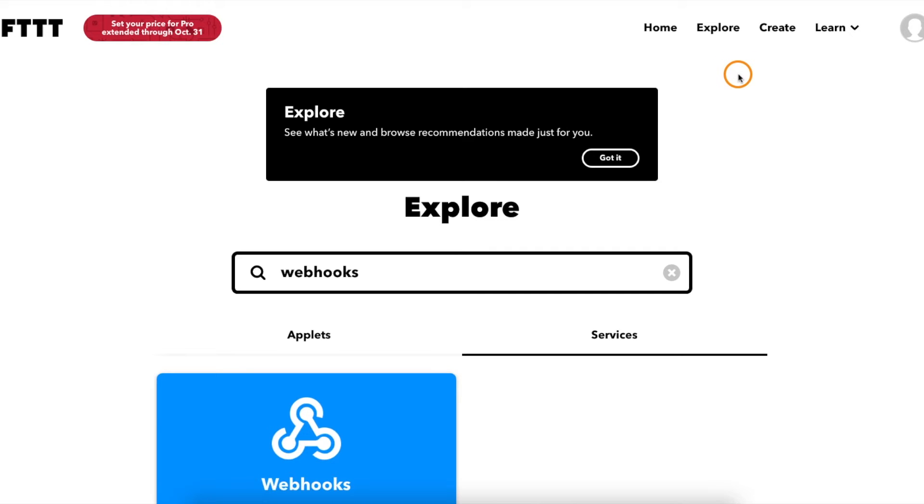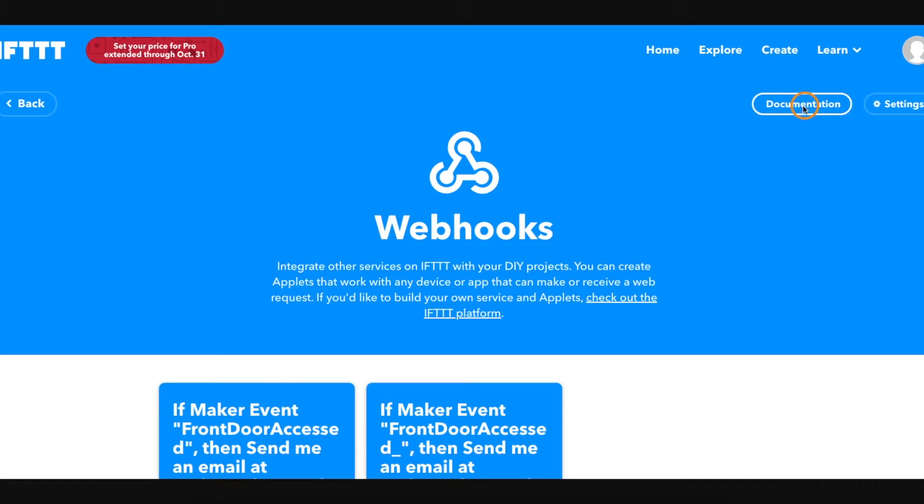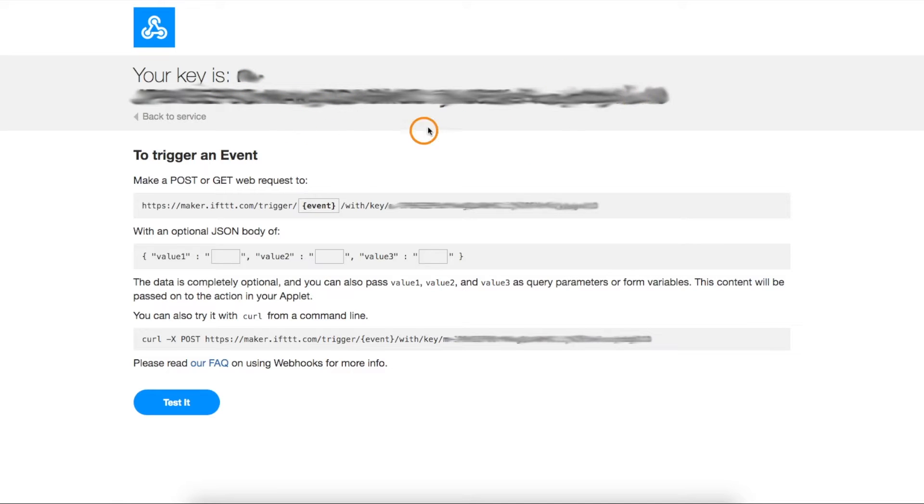And of course, in order to authenticate this so only we can do this, we need our API key. So if we go explore and type in webhooks and go to services, then click on webhooks, then click on documentation, here, we'll see our API key and a summary of things we can do. So basically, this link right here with our API key at the end, and whatever the name of our trigger event is, in my case, front door accessed, would go here, we can send this link directly into a browser address bar, and it would trigger this and send us an email. We can also test it here by clicking this, it will send us an email as if the event were triggered. So now that we have all the info we need, we can go work on a sketch for the ESP.